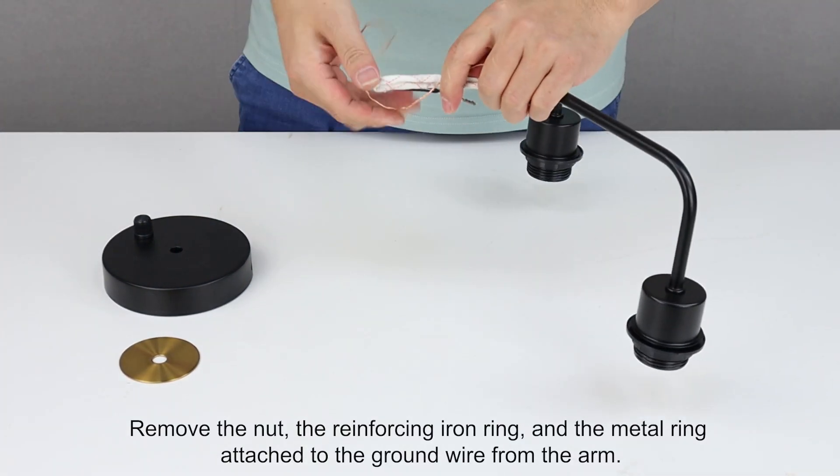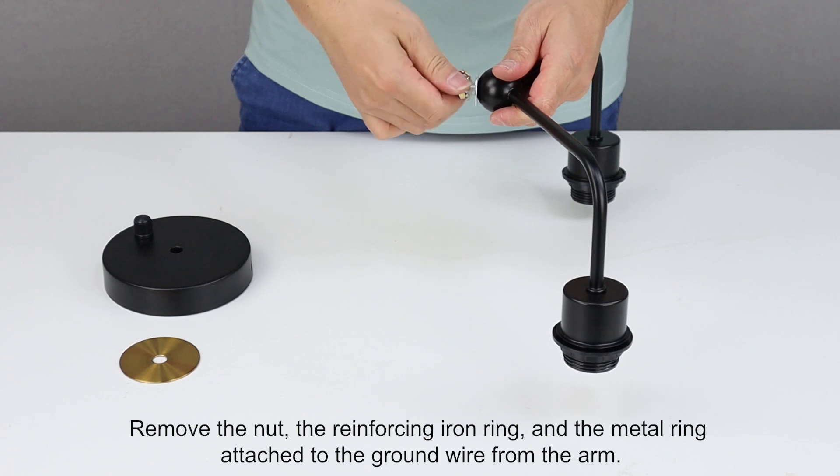Remove the nut, the reinforcing iron ring, and the metal ring attached to the ground wire from the arm.